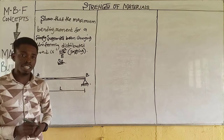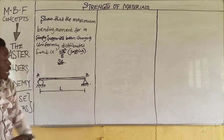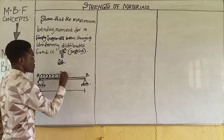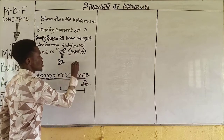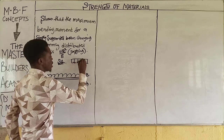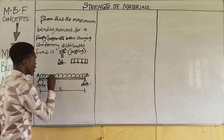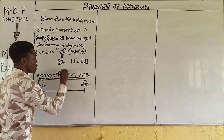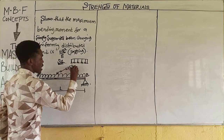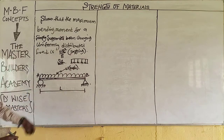This is a beam without a load. The load mentioned here is a uniformly distributed load, which can be represented in different ways — they are all the same. This is the UDL, the load in units per length, let's say kilonewton per meter.